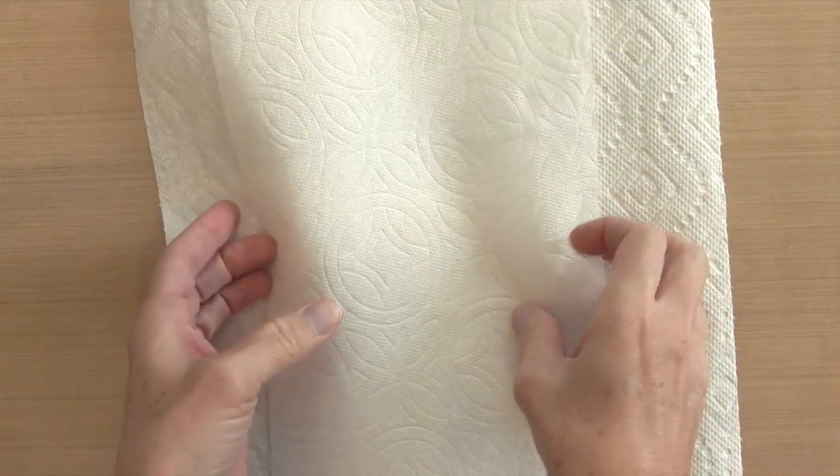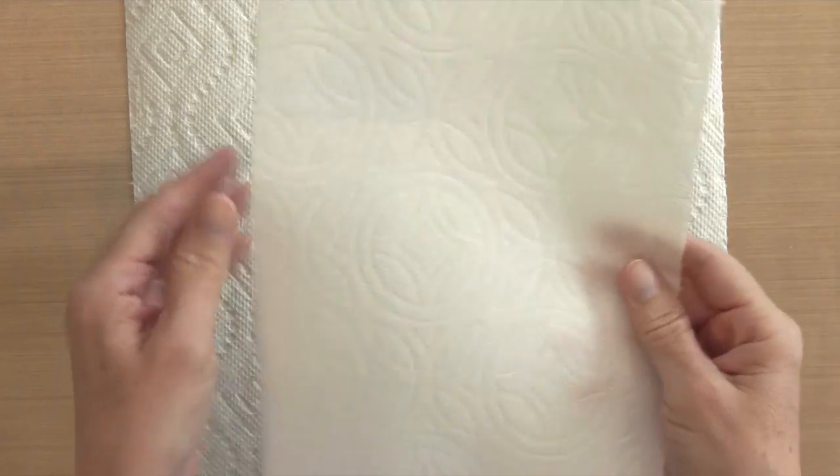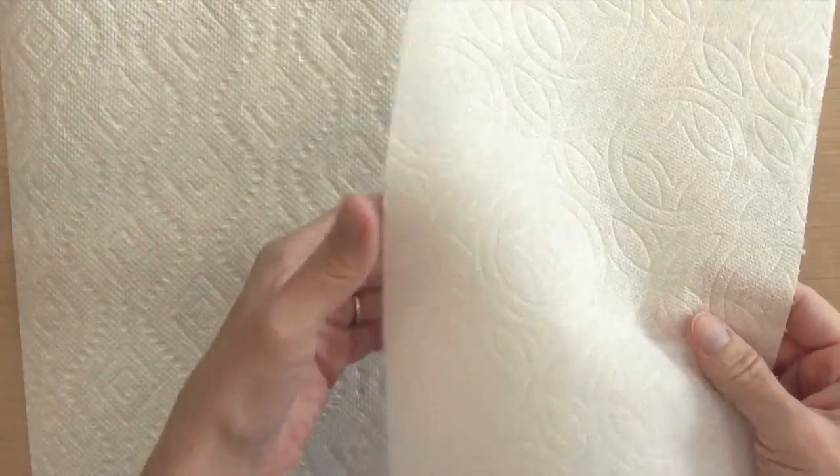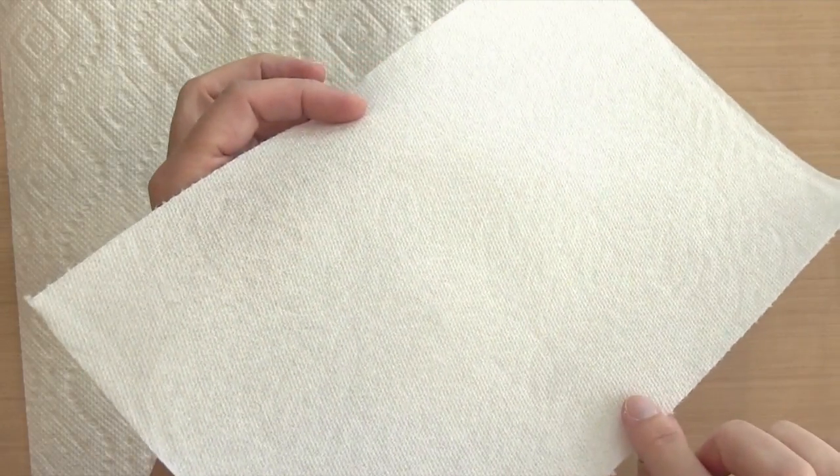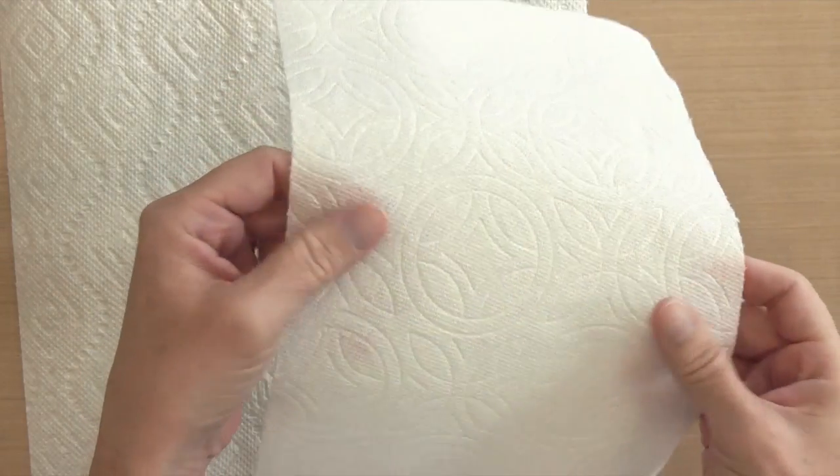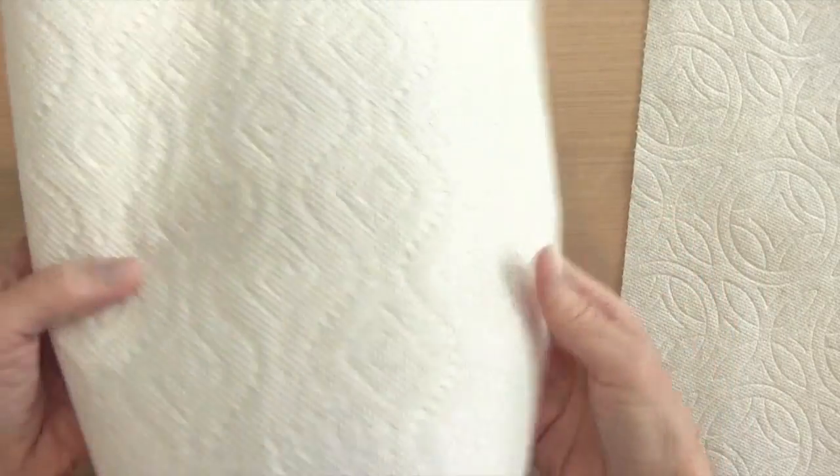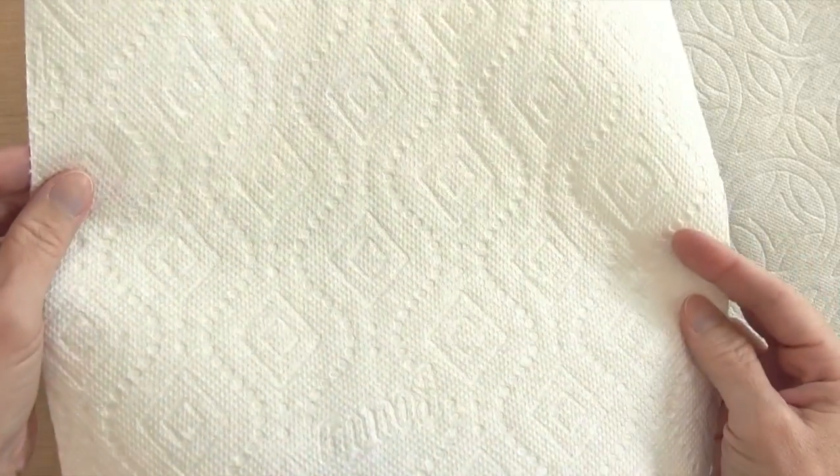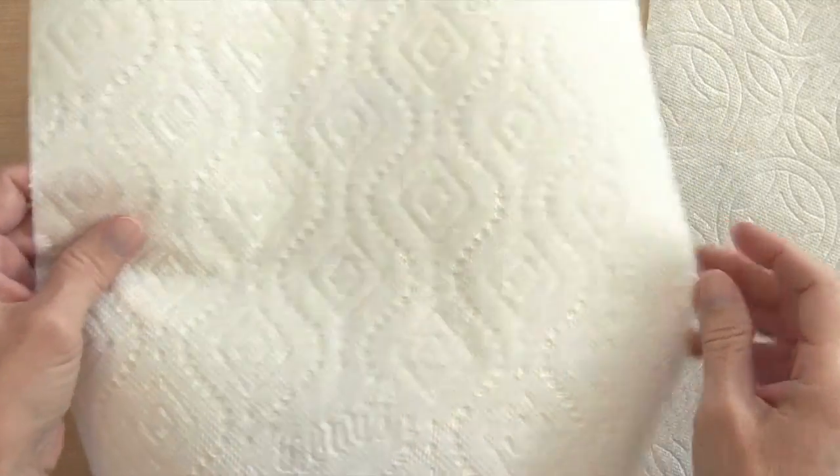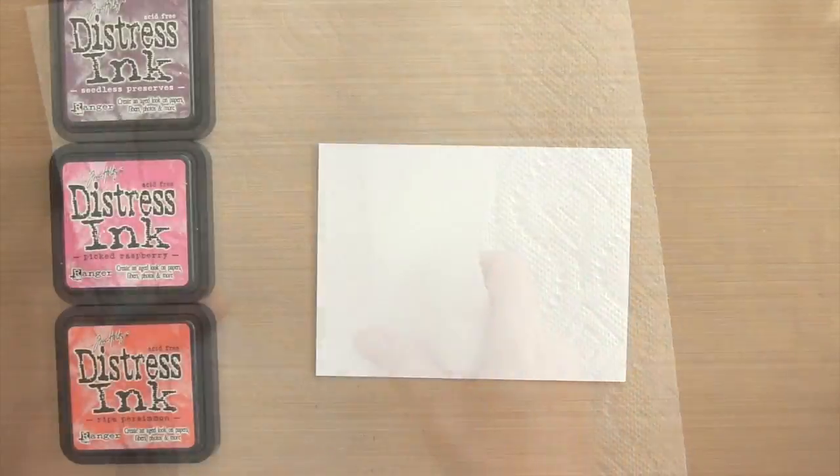What I'm using to create these backgrounds are paper towels. You can see I have two right here. The one on the right is a much thinner paper towel—they're both Bounty. It does not have a pattern on the other side, but it's a very thin towel. The one on the left is much more quilted and thick.